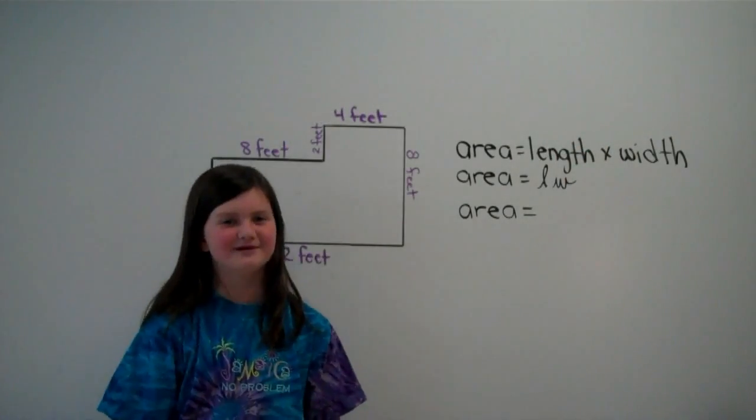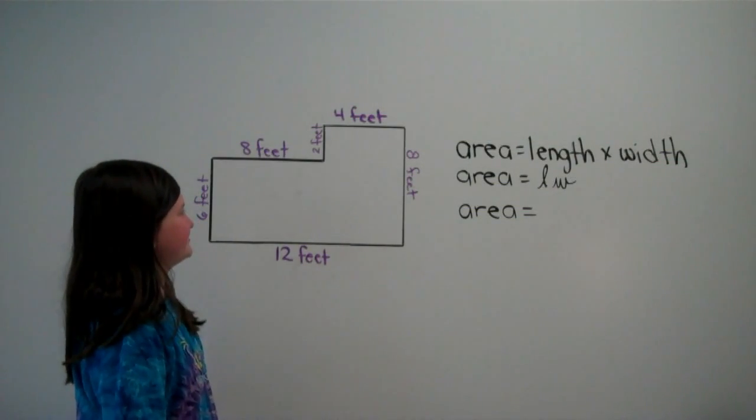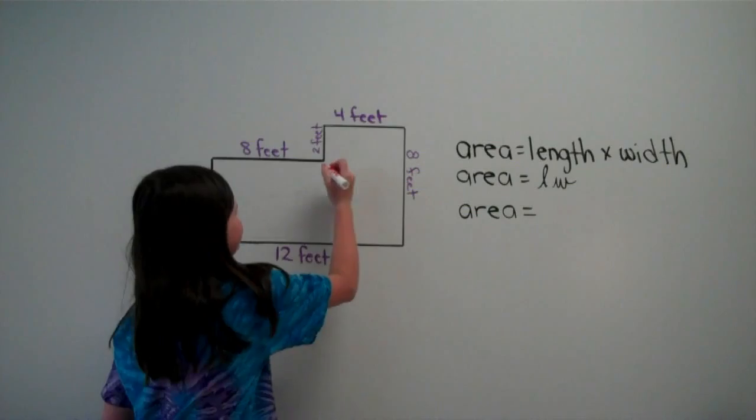Here's the next room. We're going to find out how to get the area of an irregular shape. First, you have to break it up into different rectangles.